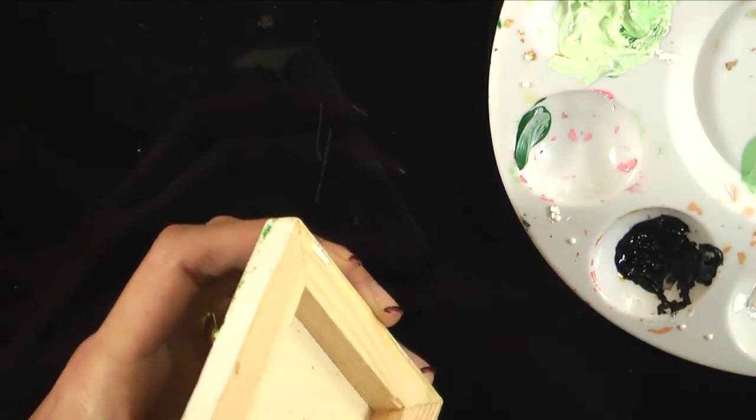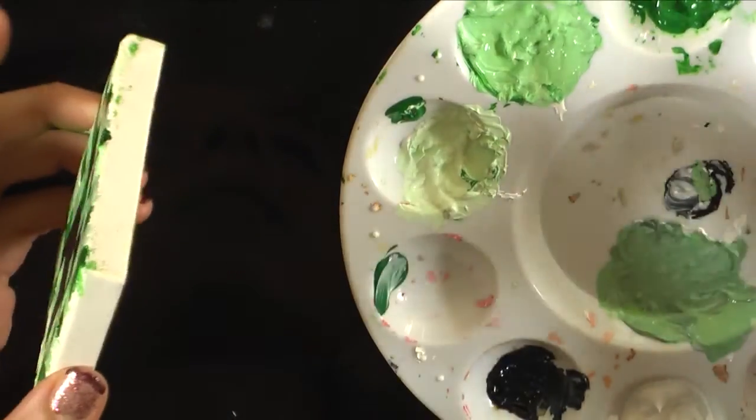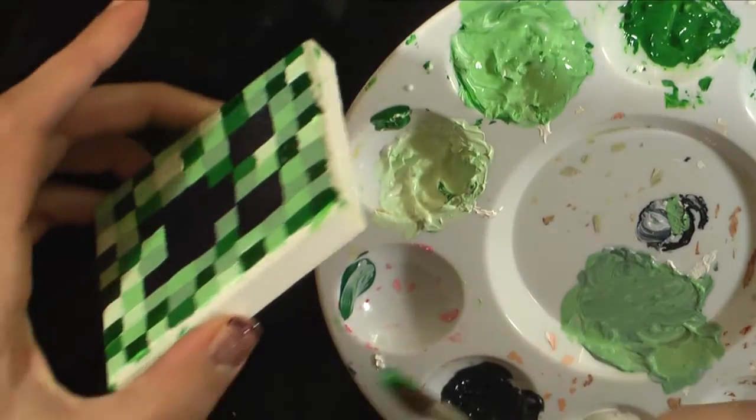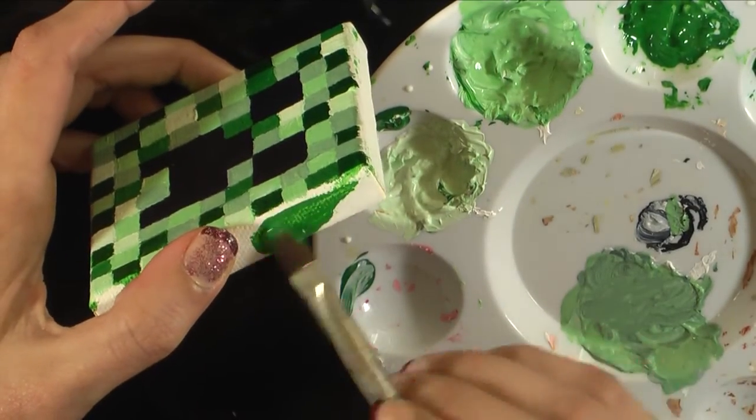And I'm going to choose just the plain sap green to do the edges with. You can choose any color that we made to do the sides of your canvas.